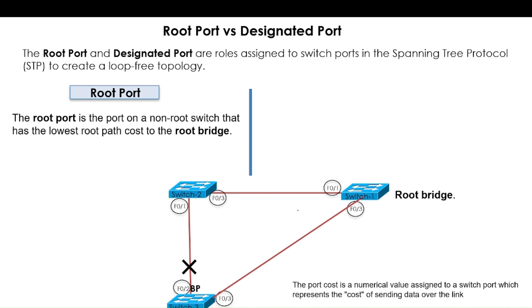The root port is the port on a non-root switch. The root port will be on the non-root bridge having the lowest root path cost to the root bridge. So the root port will only exist on the non-root bridge. The switch already selected as root and the two non-root switches or non-root bridges will each have root ports.